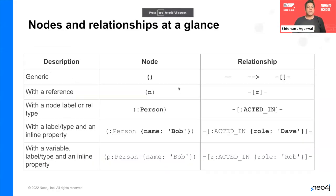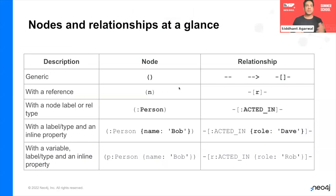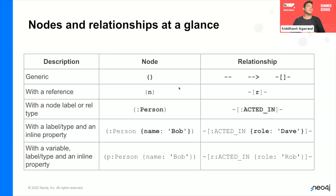Quick recap of Cypher syntax: nodes use round brackets, relationships use dashes, arrows, and square brackets. You add colons to define labels and relationship types for both nodes and relationships, and you can add inline variables to both.